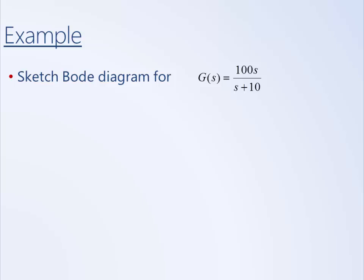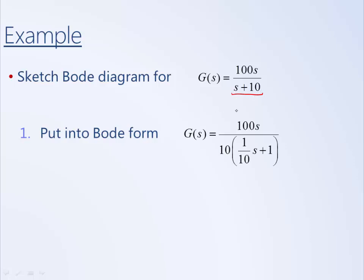Here's an example. The first step is to put the system into Bode form. Looking at this transfer function — is it in Bode form? It's not, because it doesn't have the form TS plus one for that pole. We have a 10 here where we need a 1. All we need to do is factor out a 10 from this quantity. If we factor out a 10, we'll be left with a 1 here and 1 divided by 10 here. This 10 divides into the 100, giving us 10S divided by (one-tenth times S plus 1).